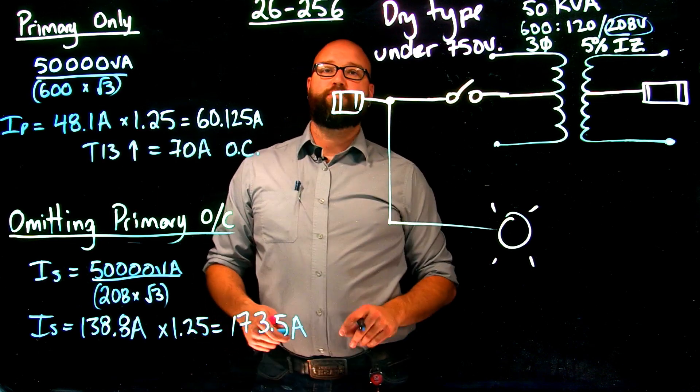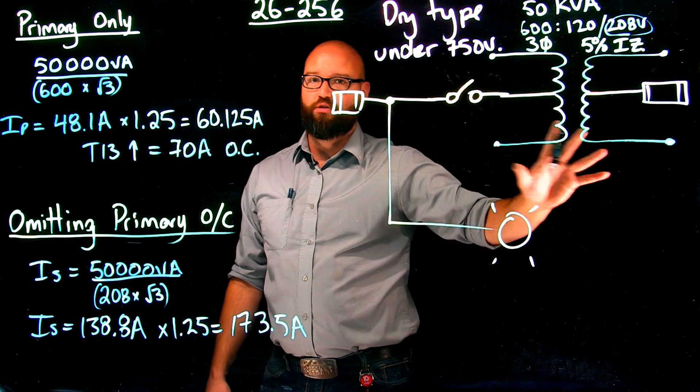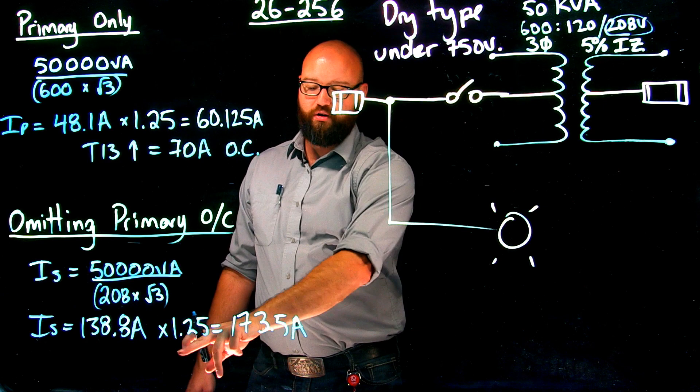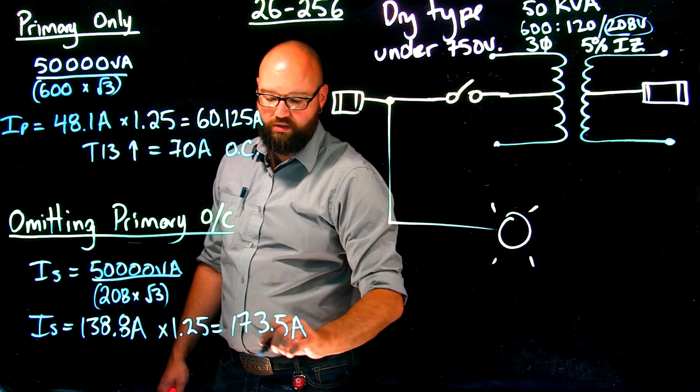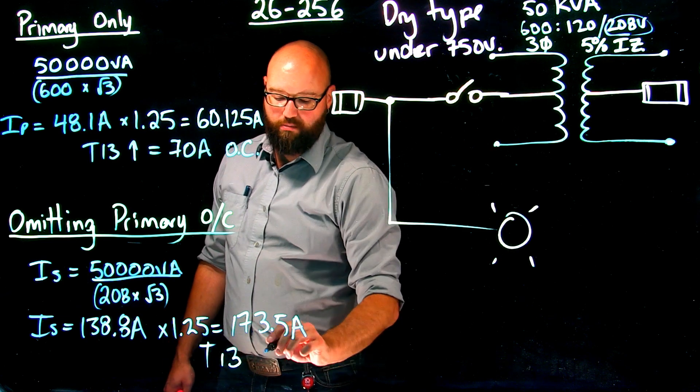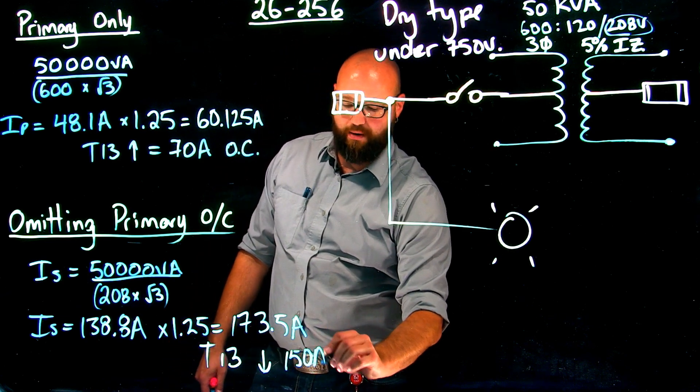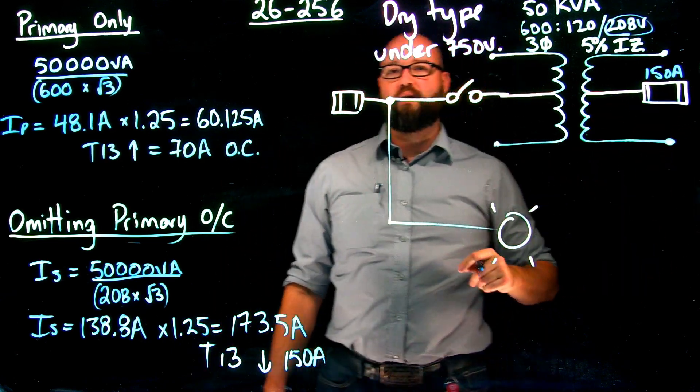Subrule 3 only applies to primary protection only, so not this situation. My secondary, I am not allowed to exceed 125% of my rated secondary. So we end up 173.5 amps. Table 13, we must go down, and we are going to choose a 150 amp overcurrent. And again, not specific to fuse or breaker.